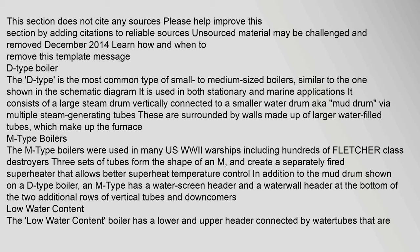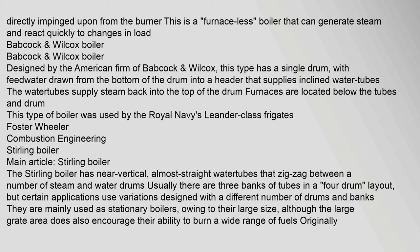The M-type boilers were used in many U.S. World War II warships, including hundreds of Fletcher class destroyers. Three sets of tubes form the shape of an M and create a separately fired superheater that allows better superheat temperature control. In addition to the mud drum shown on a D-type boiler, an M-type has a water screen header and a waterwall header at the bottom of the two additional rows of vertical tubes and downcomers. The low water content boiler has a lower and upper header connected by water tubes directly impinged upon from the burner, and can generate steam and react quickly to changes in load.